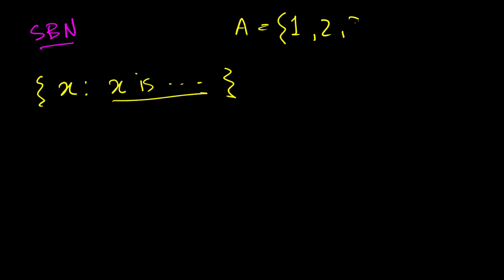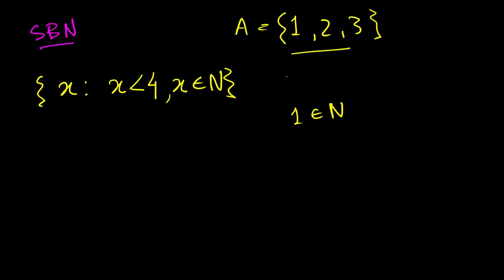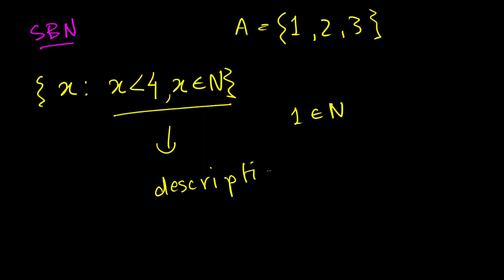Let's take our previous set {1, 2, 3, ...}. We can describe this as: the set of all x such that x is less than 4, where x belongs to ℕ (the natural numbers). All of these elements — 1, 2, 3 — are natural numbers, and all of them are less than 4. That is the description of this set.